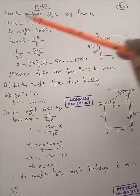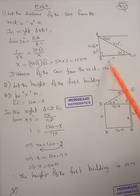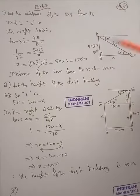In right angle triangle ABC, this is 30 degrees.